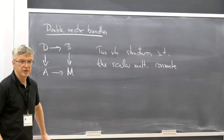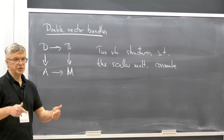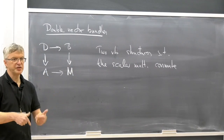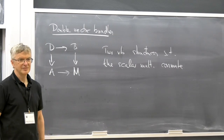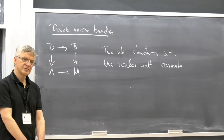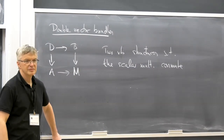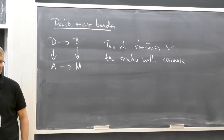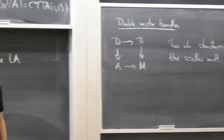It's an easy fact that a vector bundle structure is uniquely determined by a scalar multiplication — if you know the scalar multiplication, you know the addition. In terms of coordinates, you have coordinates of weight (1,0) and coordinates of weight (0,1), and this automatically reconstructs the whole picture, giving a local description of the double vector bundle.